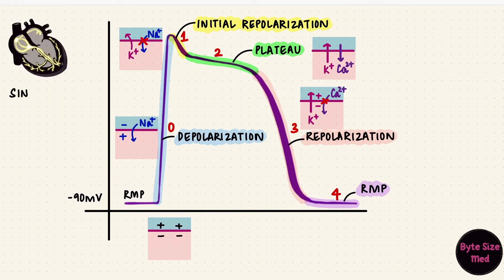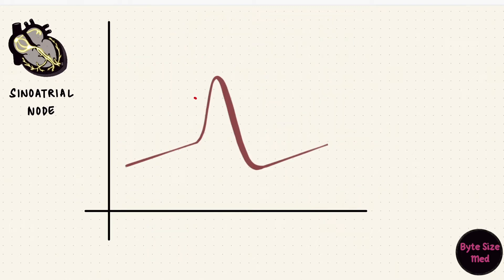In the conducting cells of the sinoatrial node, it looks a little different. There's phase zero, phase three, and phase four, but there are no phases one and two, so there's no notch and no plateau.